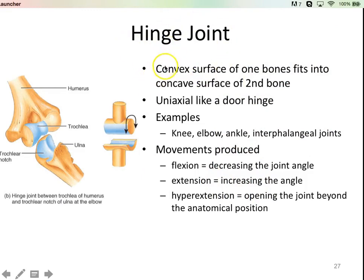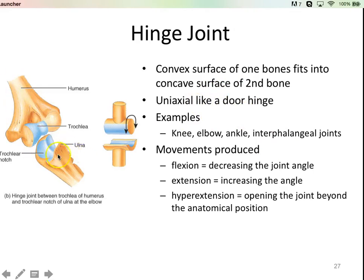A hinge joint is what it sounds like — like a door hinge. Classic examples are your elbow, your knee, between the talus and your tibia, and the joints between your phalanges in your fingers. Here you're seeing it between the humerus and the ulna — here's the trochlea, here's the trochlear notch. It provides an anterior-posterior movement: flexion, extension, and in some cases hyperextension, depending on the actual structure of the joint.